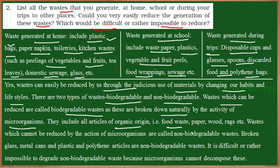Biodegradable waste can be food waste or waste produced by plants and animals. For example, paper, wood, and rags also come under biodegradable waste because they can be broken down by the action of decomposers, that is, microorganisms. Waste which cannot be broken down by the actions of microorganisms or naturally is called non-biodegradable waste.